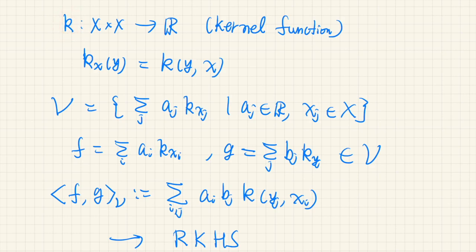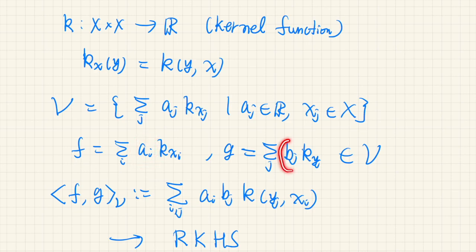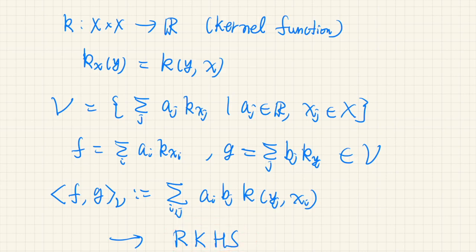Suppose we have a kernel function k on X. We can regard this as a univariate function of one variable parameterized by the other variable. Using these parameterized functions, we can define a space of functions consisting of linear combinations. On this space, we can define a product: for any two elements f and g, represented as linear combinations with coefficients a_i and b_j, we define their product using those coefficients and the kernel function. We can show this product is actually an inner product, which induces a reproducing kernel Hilbert space with this kernel function as its reproducing kernel. In this video, we will see how to produce a reproducing kernel Hilbert space starting from a kernel function.